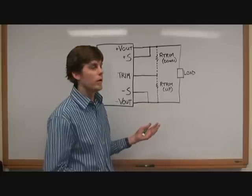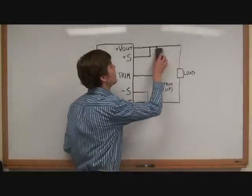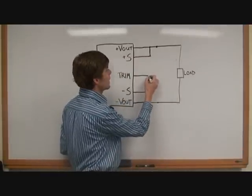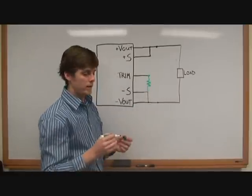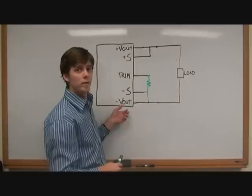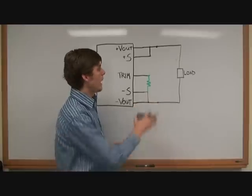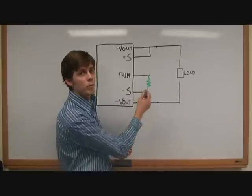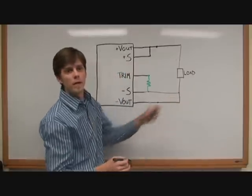So to connect one of our converters with a trim resistor to trim up, we would connect that resistor directly from the trim pin down to the minus sense pin. Now oftentimes you would connect the minus sense and the minus V out pins together directly, but if you're connecting the remote sense lead out closer to the load, then you want to make sure that you connect the trim resistor to the sense pin, and then the sense pin is out closer to the load.